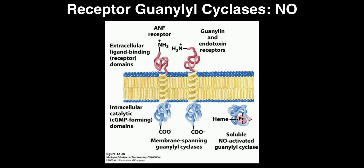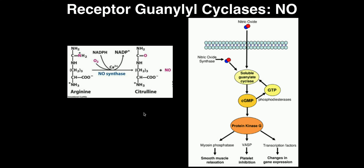We're going to focus on the soluble version because nitric oxide has so many important effects. Nitric oxide is made by nitric oxide synthase. Certain cells — particularly those of the vascular endothelium — use arginine and convert it via nitric oxide synthase into citrulline, producing nitric oxide as a byproduct. The nitric oxide then acts on smooth muscle cells, which control the diameter of blood vessels.